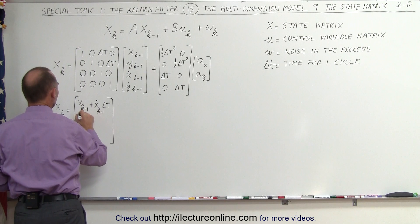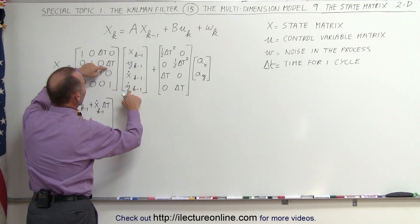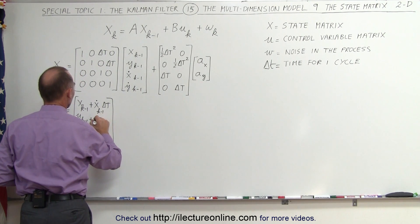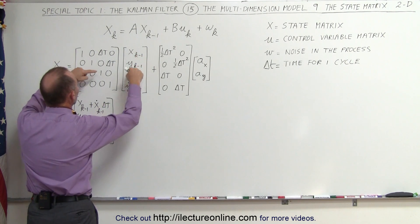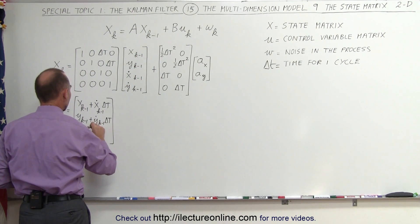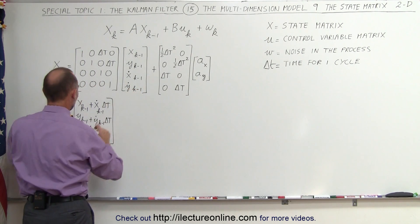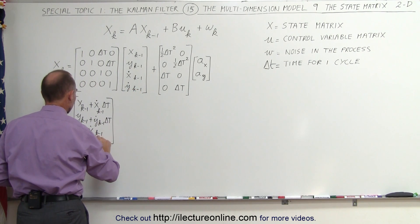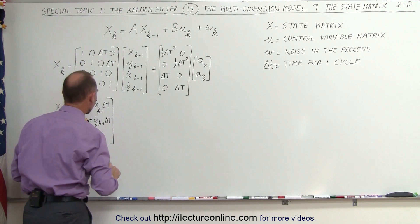We now get the same for the y direction. So we have y sub k minus one, add to that the adjustment made for the velocity in the y direction. Then, if we continue, we get the velocity in the x direction k minus one ago, and then we have the velocity in the y direction k minus one ago — and that should be a subscript, so let me lower it a little bit — k minus one.